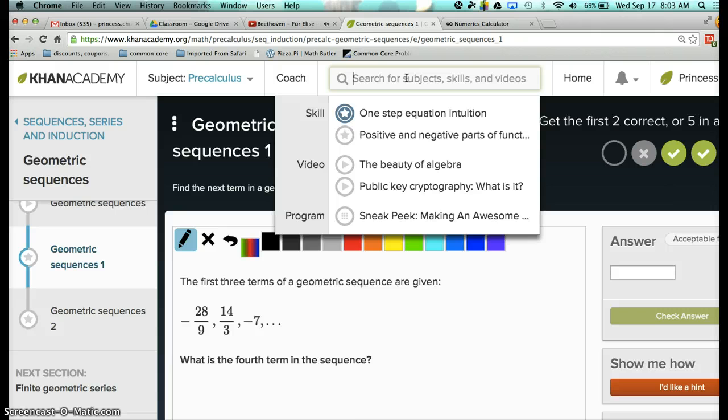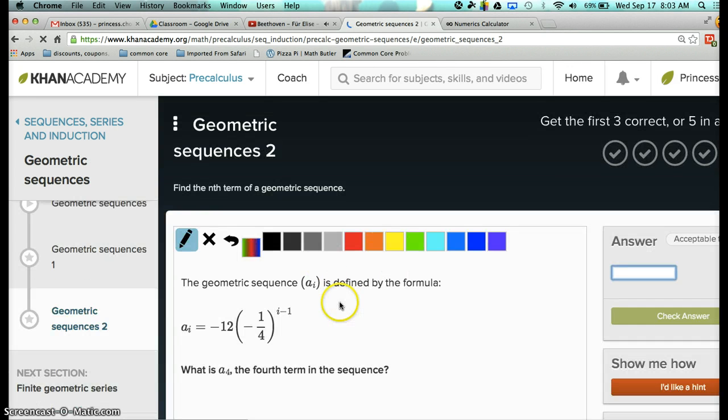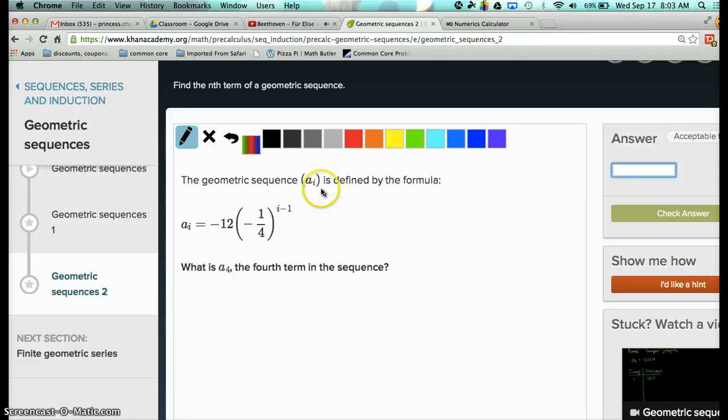So then, now I'm not going to do any more geometric sequences 1. Let's do geometric sequence 2. All right, so again, a sub I is the same as what? F of x. So as far as the terms that we have been using, a sub I is the same as f of x. So this is an explicit formula. f of x, a sub I is the same as f of x, is equal to negative 12 times negative 1 over 4 raised to the power of x minus 1. All right, so then it says, what is a 4? That means what is your answer when you have f of 4? So all you have to do is plug in the 4 instead of the i right here.